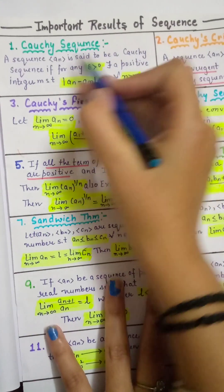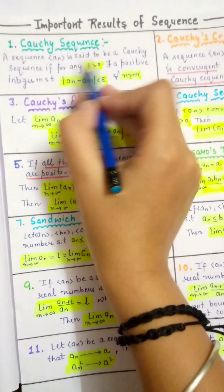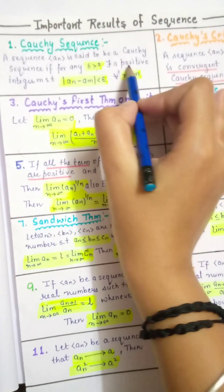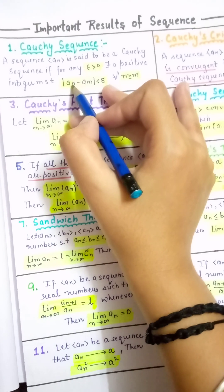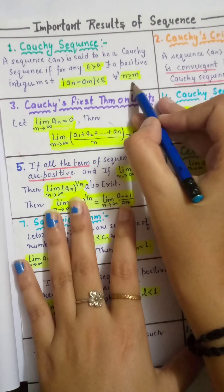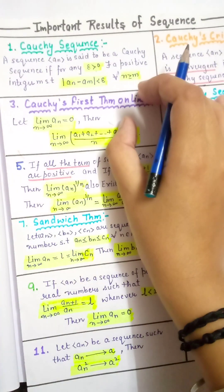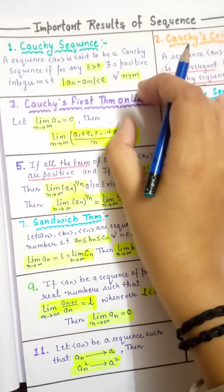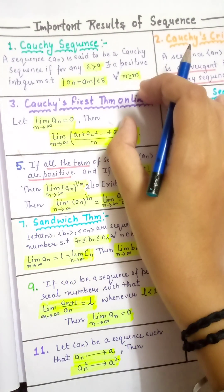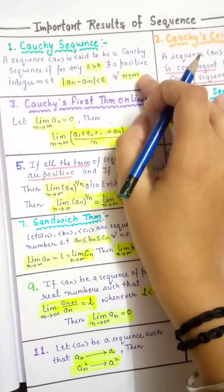First is the Cauchy sequence. A sequence AN is said to be a Cauchy sequence if for any epsilon greater than 0, there exists a positive integer M such that mod of AN minus AM is less than epsilon for all N greater than or equal to M.